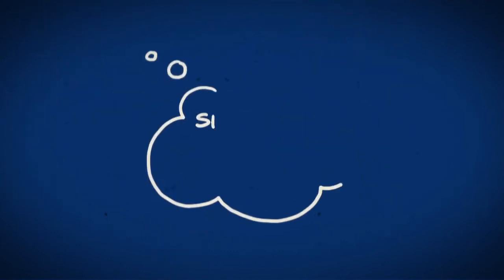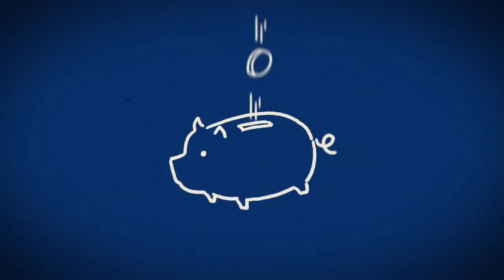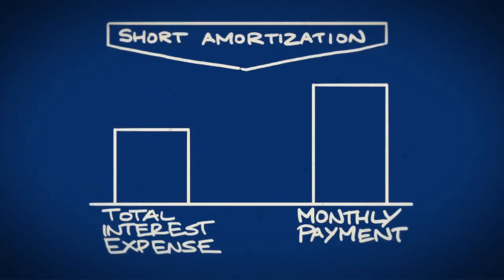You can consider a shorter amortization if your goal is to pay off your mortgage faster. With a shorter amortization, you'll save money because you'll pay less interest over the life of the mortgage. The trade-off here is that your regular mortgage payments will be higher.